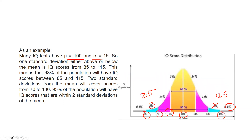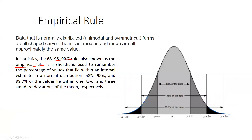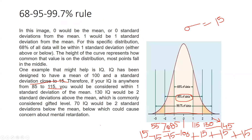I hope this video is helpful for understanding what the empirical rule — or the 68-95-99.7% rule — means. In the next video, we are going to calculate one problem to find the probability of how many people would fall within these values. Thank you. Keep watching.